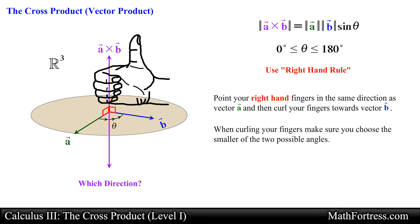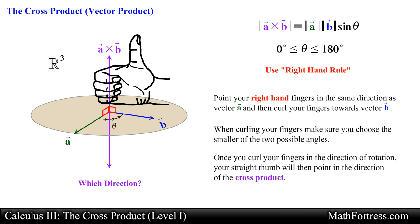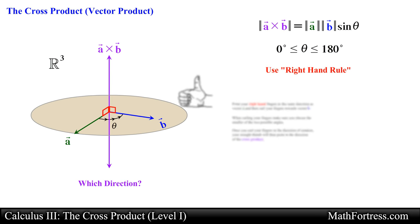When curling your fingers, make sure you choose the smaller of the two possible angles, since theta was defined to be an angle between 0 and 180 degrees. Once you curl your fingers in the direction of rotation, your straight thumb will then point in the direction of the vector produced when you cross vector a and vector b with one another.